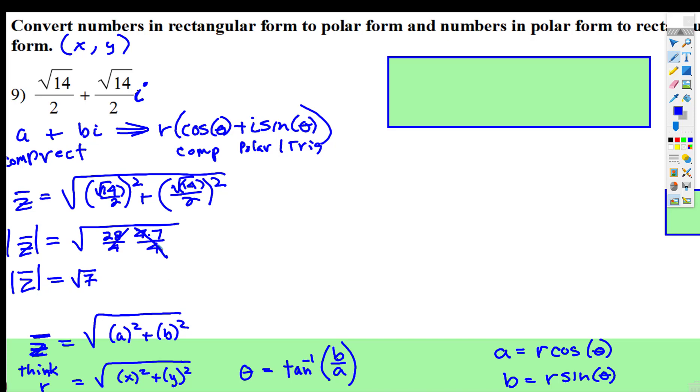Then we're going to find the theta. Remember, we're going to treat it the same way, it's arctangent. But instead of y over x, we're going to take b over a.